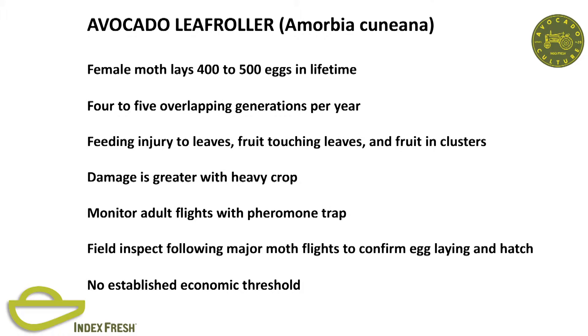Amorbia, or leaf roll—similar life cycle, feeds on leaves, fruit touching leaves, fruit in clusters. Damage is greater with a heavier crop. Same monitoring, no established threshold. I was looking at Zutanos in Terra Bella in the 90s—a grower didn't want us to inspect the avocados, and he had an Amorbia outbreak. We were looking in fruit clusters and found probably 20 fruit per every cluster, a heavy crop, and the worms were everywhere. We found out he had sprayed Lanate, and that most likely caused a disruption—if there was any biological control in there, he totally messed it up, and he still had the problem. Same controls for Amorbia as looper.